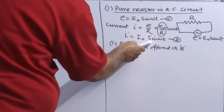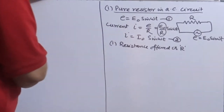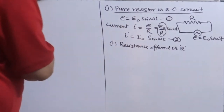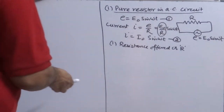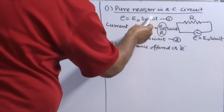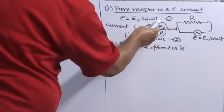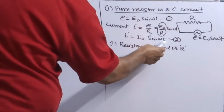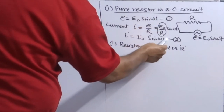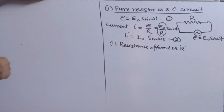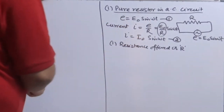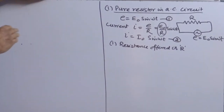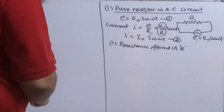E is varying according to the sine function and I is also varying according to the sine function. If both are varying according to the same type of function, you can take the difference of the arguments — the angle attached with the sine. The argument for EMF is ωt and for current is also ωt, so the phase difference is zero: ωt − ωt = 0. If they were different functions, first bring both equations to the same function and then take the argument difference.